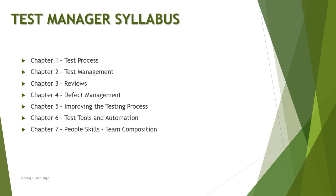Chapter six is about test tools and automation — how to select and implement a tool within an organization, how automation implementation can happen, and how to make decisions about automating within your project. Chapter seven covers people skills — how to create and form a team for a project, how to identify people's skills, and what team composition should look like to add value to overall project execution.